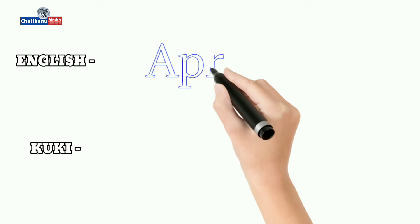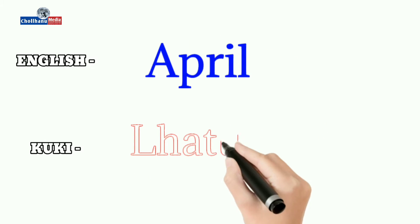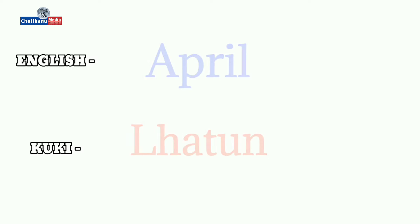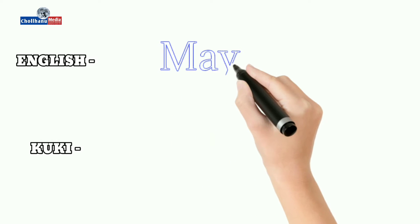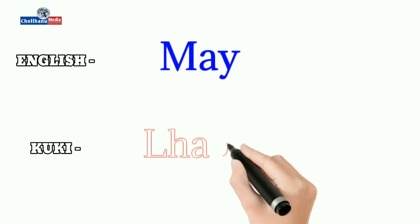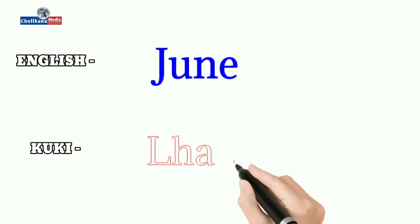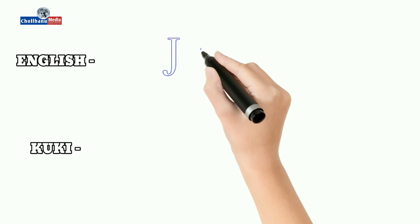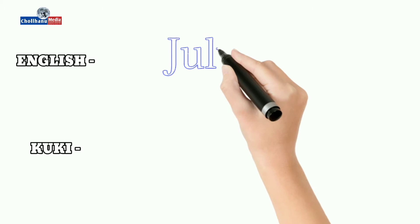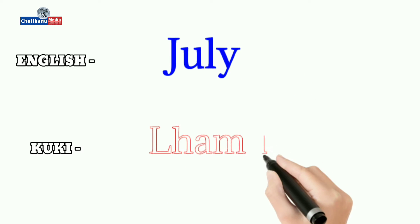April: Platoon. May: Plapul. June: Pladow. July: Plamul.